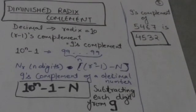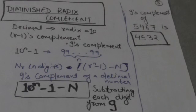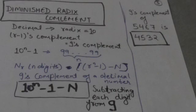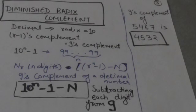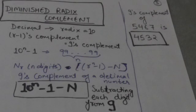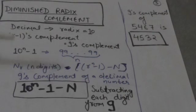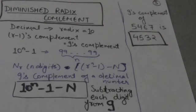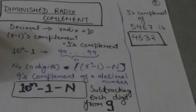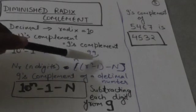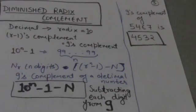First of all we will study about the diminished radix complement. The decimal number system is of base or radix 10, so its diminished radix complement — or r minus one's complement — is the 9's complement, because here the base or radix is 10, so r minus one's complement is 9's complement. The formula for diminished radix complement or r minus one's complement is r raised to power n minus 1 minus N.